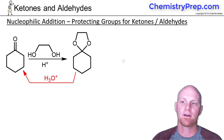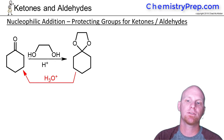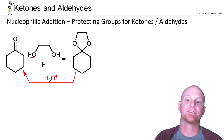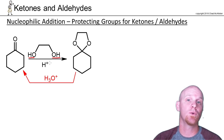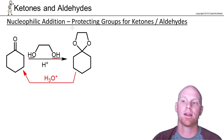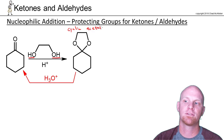In this next example, instead of doing the acid-catalyzed addition of two equivalents of an alcohol, I'm actually using ethylene glycol, which is a diol. It only requires one equivalent because it itself has two alcohol functional groups. As a result, you end up forming a ring, and you get what we'll often refer to as a cyclic acetal.